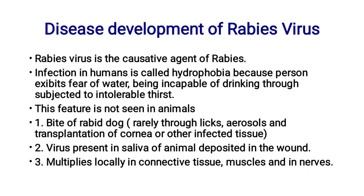What diseases are developed by Rabies Virus? Rabies Virus is the causative agent of the disease rabies. Infection is mainly acquired in humans and is called hydrophobia because the patient exhibits a fear of water, being incapable of drinking despite intolerable thirst. This feature is not seen in animals.